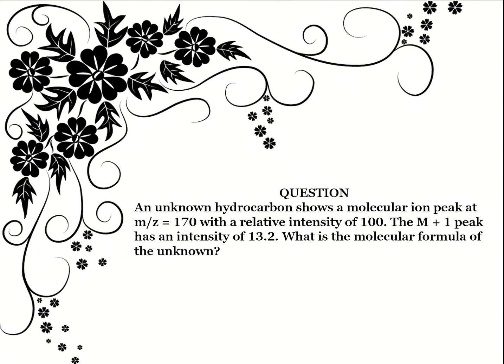An unknown hydrocarbon shows a molecular ion peak at m/z = 170 with a relative intensity of 100. The M+1 peak has an intensity of 13.2. What is the molecular formula of the unknown? Having looked at the benzene and hexane examples, pause and try this question before listening to the answer.